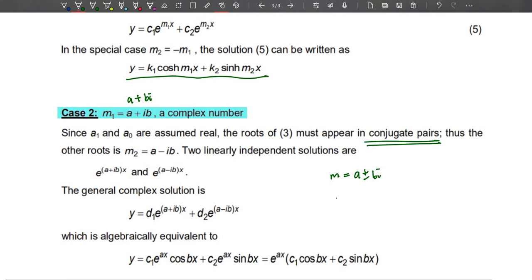Where m_1 = a + bi and then m_2 = a - bi. So here, two linearly independent solutions are y = d_1 e^((a+ib)x) + d_2 e^((a-ib)x).